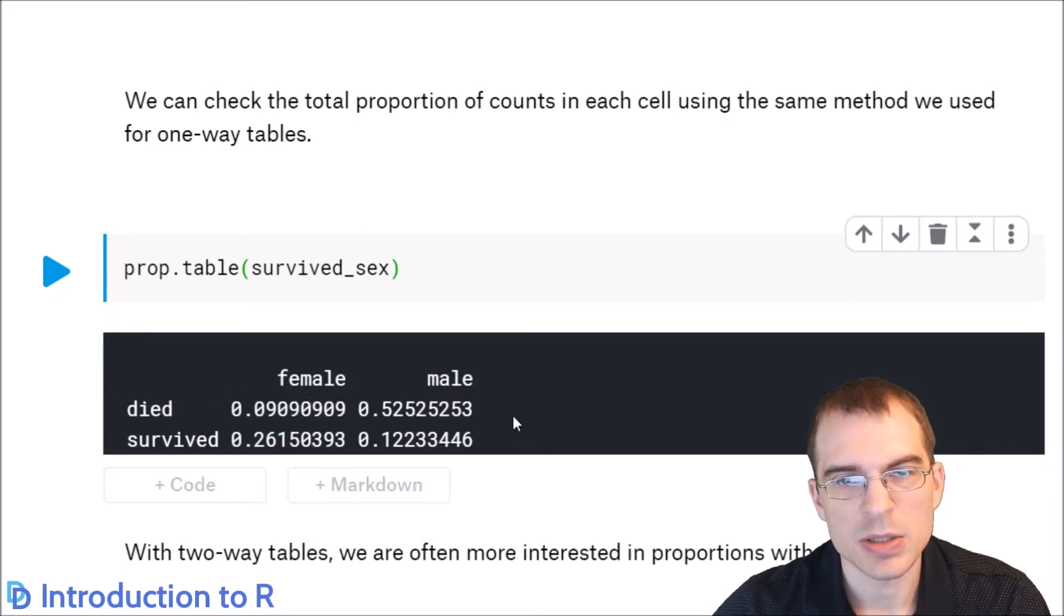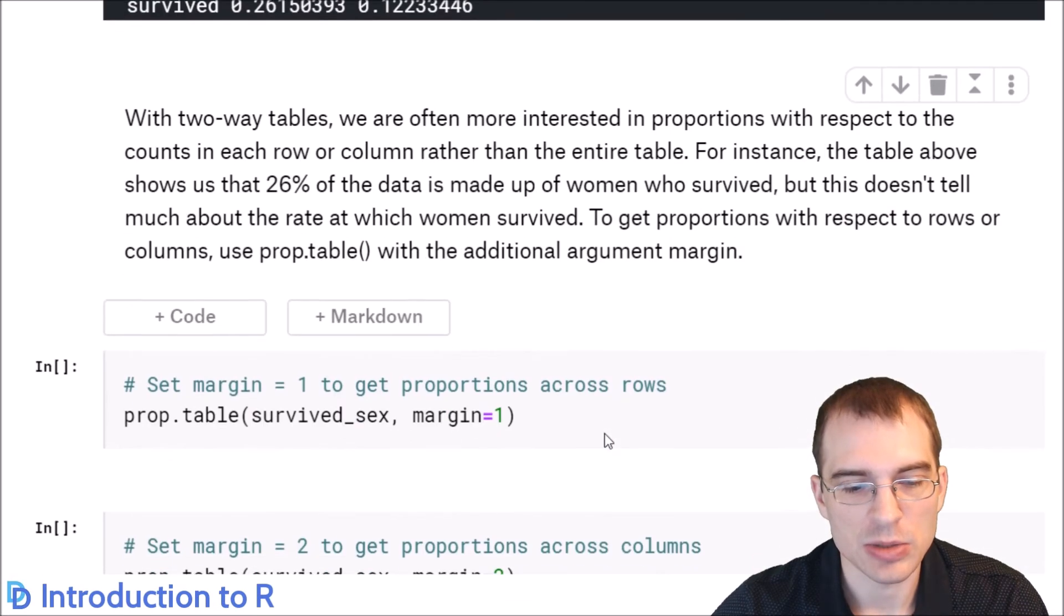Now, this table is a little bit weird because it's giving us percentages of the data as a whole instead of percentages across a given variable. So we might be more interested, for instance, in the proportion of people that died that were male and the proportion of people that died that were female, not the proportion of the total amount of data points that were specifically males who died only. So to get those proportions across a given margin instead of the entire table all at once, you can pass a margin argument to prop.table.